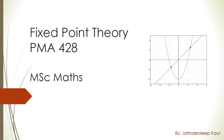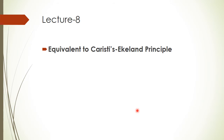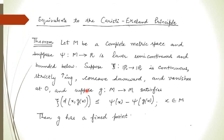This is lecture 8 and today I am going to explain the equivalent theorem to the Caristi fixed point principle. This theorem says: let m be a complete metric space and ψ be a mapping going from m to ℝ which is lower semi-continuous and bounded below. We are having a mapping ψ which is lower semi-continuous and bounded below, and suppose ξ is a mapping going from ℝ to ℝ.